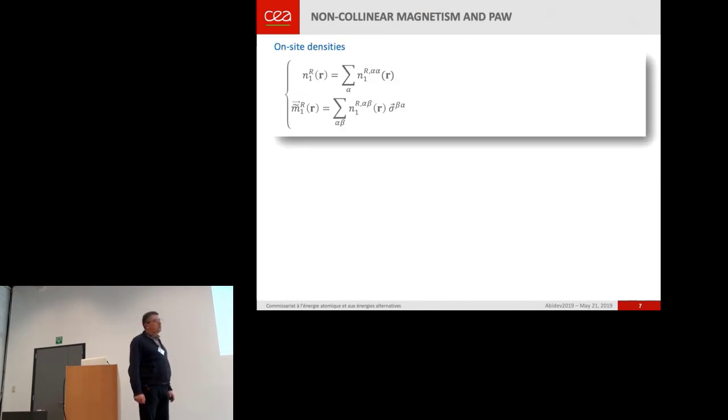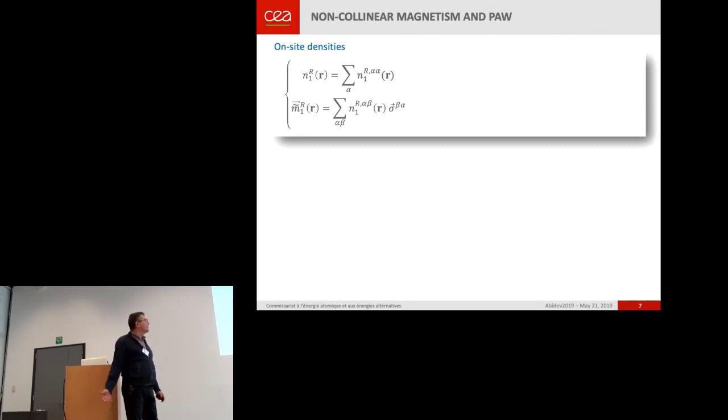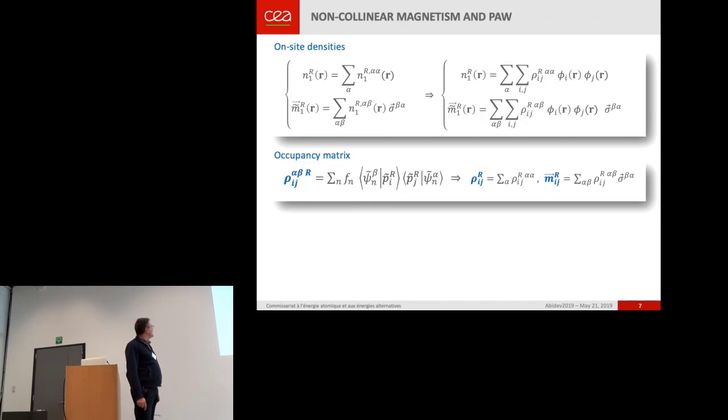And when you go to PAW, you have the same. All the on-site densities can be expressed as two-by-two matrices. And you can use the Pauli matrices to go from one representation to the other. And the occupancy matrix is the same.